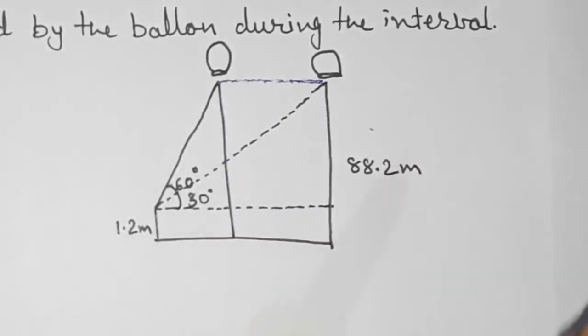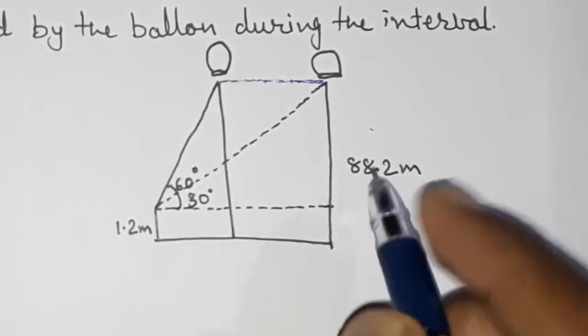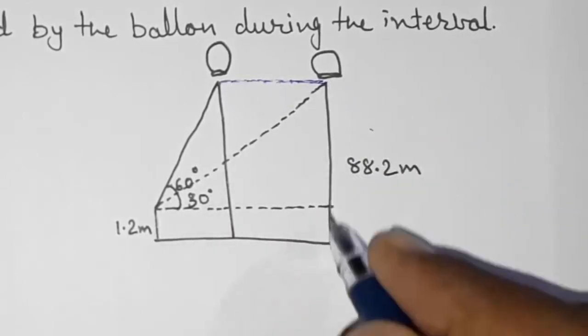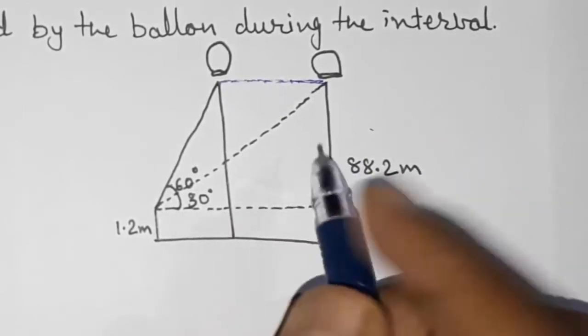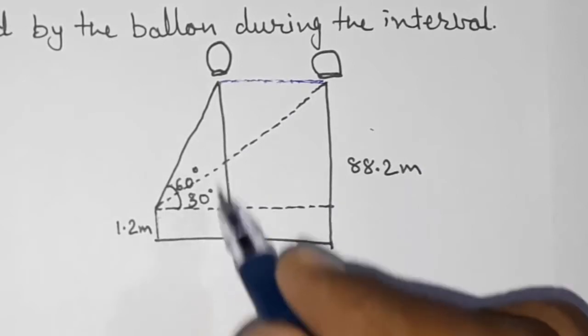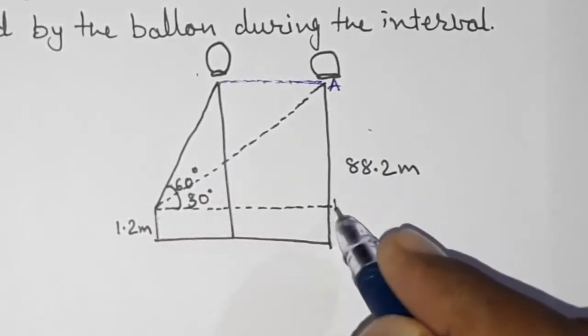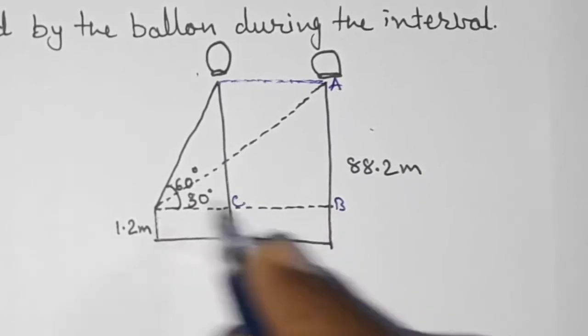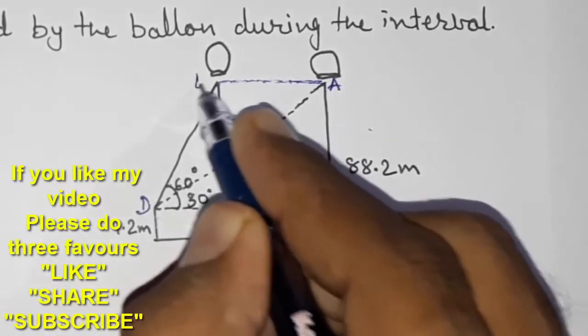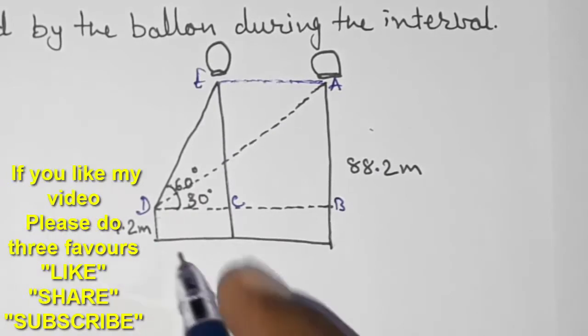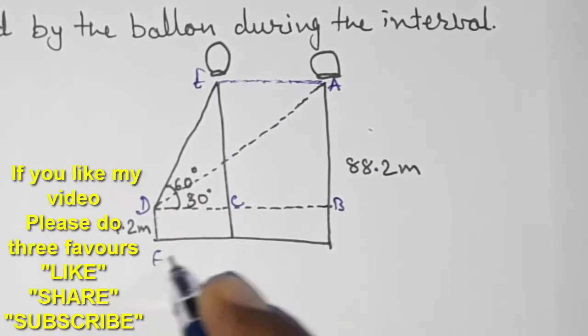How we can find out this distance? Look here, it is 88.2 meters above the ground and so we are getting here two right angle triangles. I am giving names to this: take it as A, B, C, D and this take it as E.